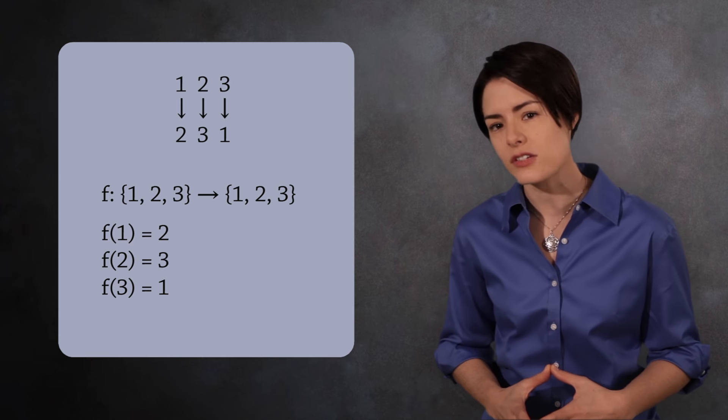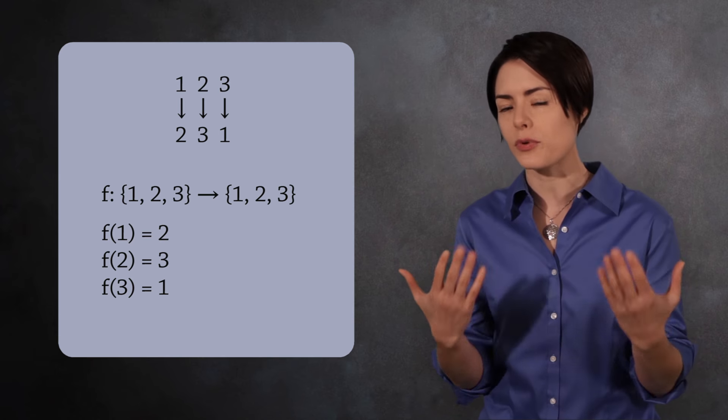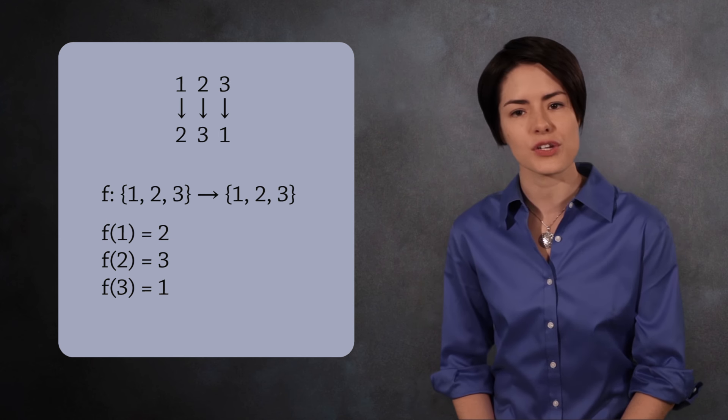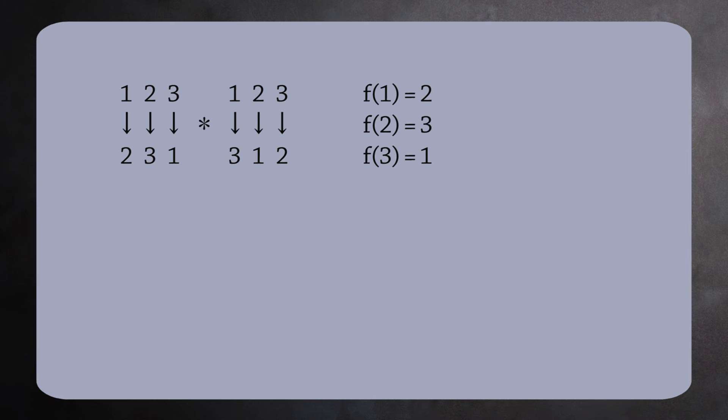Treating the permutations as functions allows us to define the group operation. Multiplication in S3 is just function composition. For example, to multiply the permutations 2, 3, 1 and 3, 1, 2, we start by writing these permutations as bijections f and g.